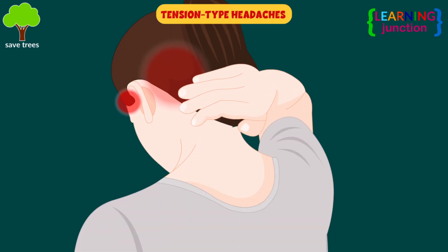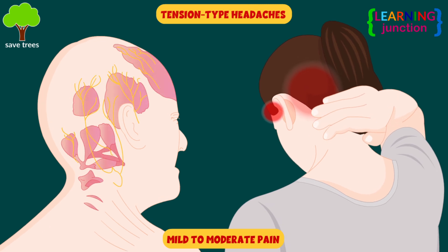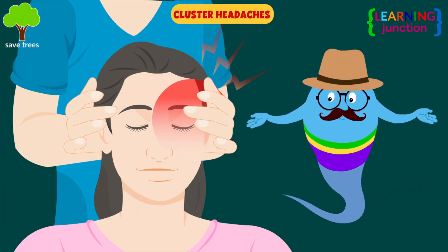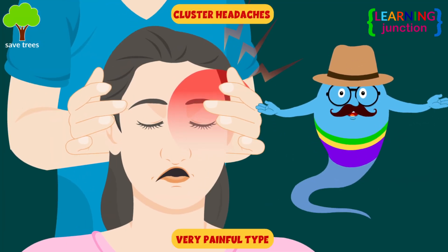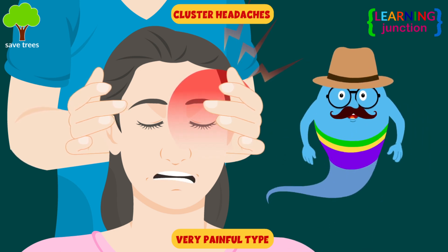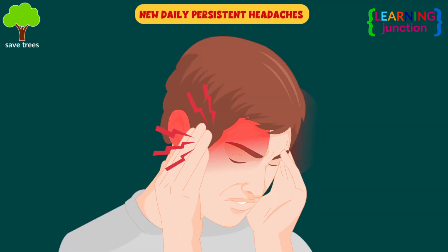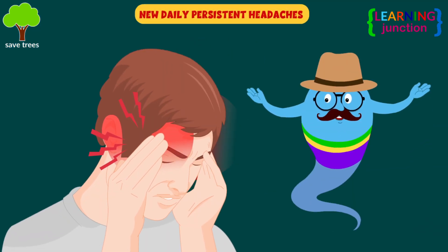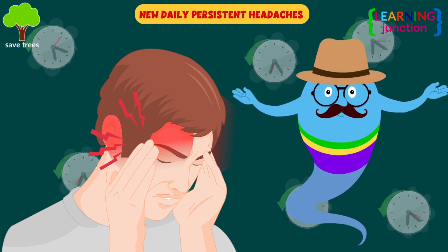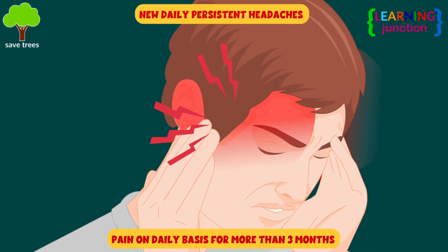Tension type headaches. This is a mild to moderate pain often described as feeling like a tight band around the head. Cluster headaches. This is a very painful type of headache. It usually arises in periods of frequent attacks known as clusters. New daily persistent headaches. It occurs in a person who does not have a past history of persistent headaches and which then persists on a daily basis for more than about three months.